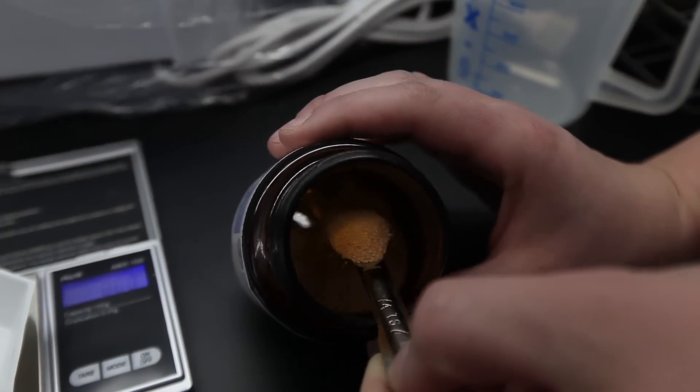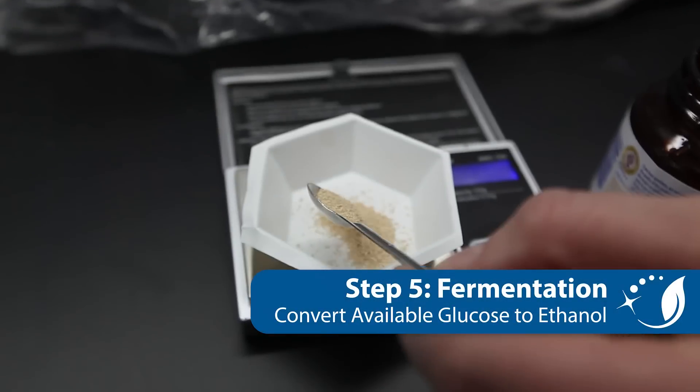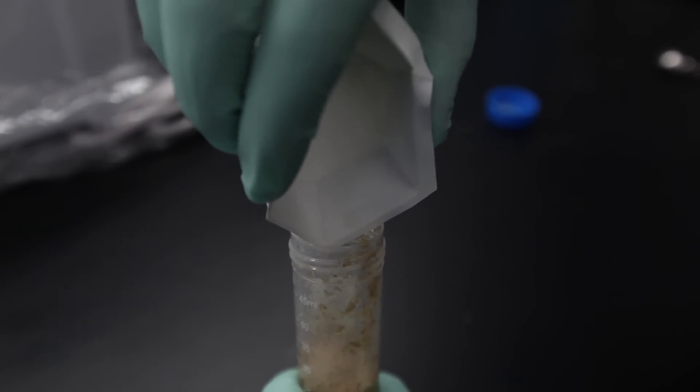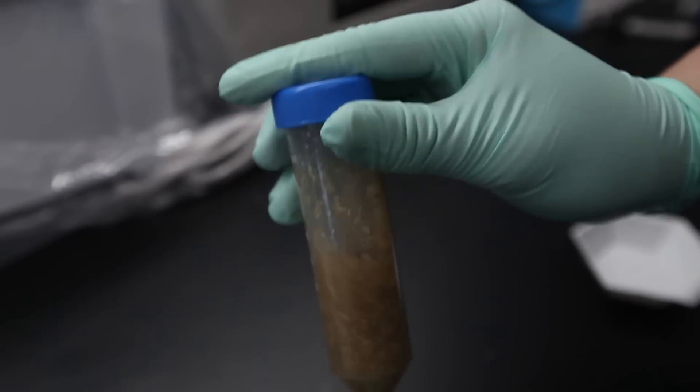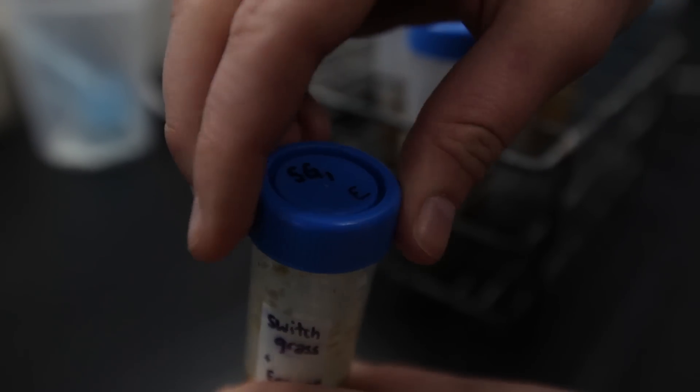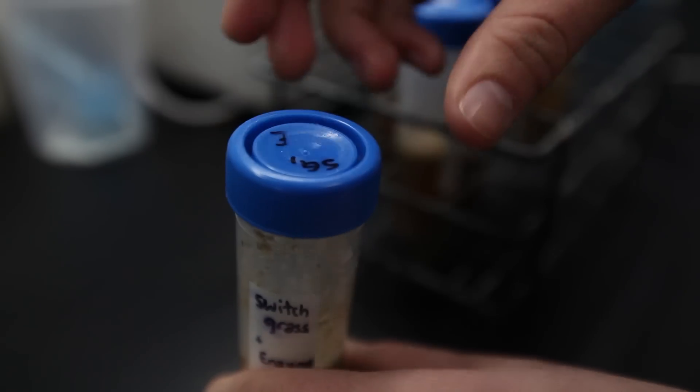The fifth step is to add yeast to the samples and begin fermentation. Measure out roughly one gram of standard baker's yeast and add it to each sample tube. Make sure to shake thoroughly so that the mixture is fairly homogenous. After shaking, it is important to loosen the cap slightly so that the pressure doesn't build up during fermentation. This could skew your results.